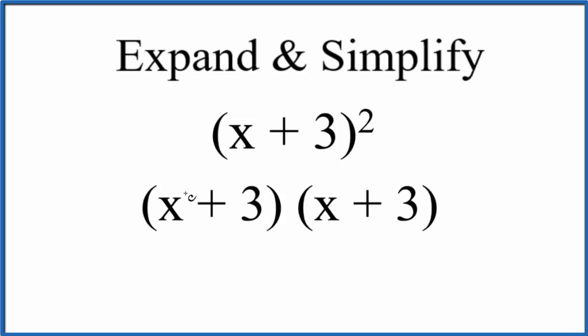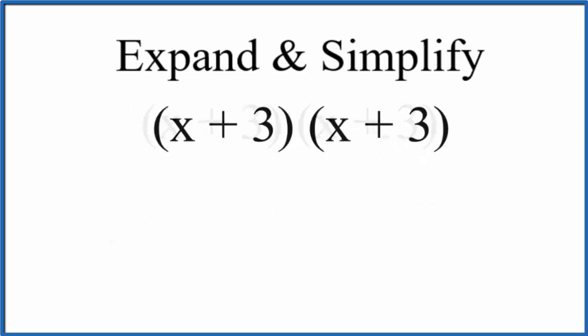But now it's a little bit easier to use the distributive property. We can multiply this x times both of these terms and then multiply this 3 by both of these terms. So let's use x plus 3 times x plus 3. You might have heard